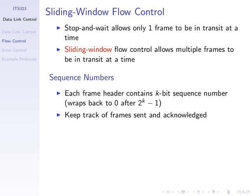The length of a sequence number depends on the specific protocol — in general, k bits. Different protocols define the number of bits they use. The sender and receiver use sequence numbers to keep track of the frames sent and received. Because we allow the sender to send not just one frame but W frames, both sender and receiver keep track of frames that have been sent and acknowledged, and the frames they're allowed to send.